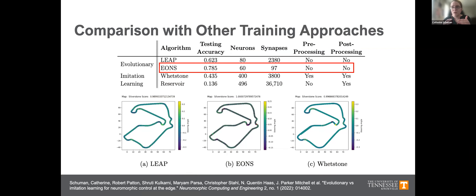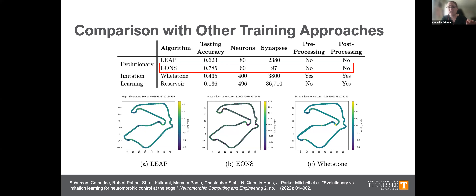Our TenLab framework enables us to easily swap out the algorithm on the application. We compared EONS against: a different evolutionary algorithm approach using the LEET package (training weight values with hyperparameter optimization on network structure, feedforward network); imitation learning using Wetstone — an open source library from Sandia National Labs using backpropagation-style training for SNNs; and a reservoir computing approach. The EONS approach not only gave us the best performance but also gave us networks that were very small compared to the other approaches.